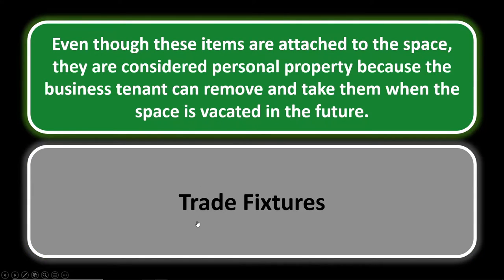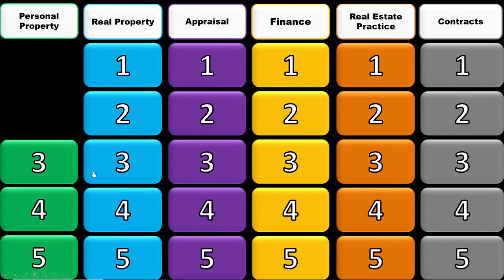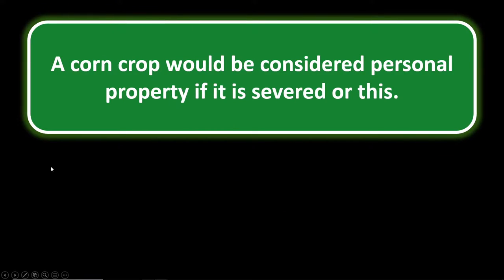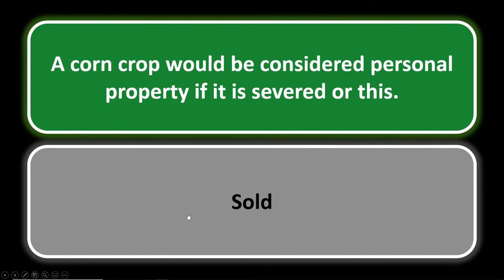Personal property number three: a corn crop would be considered personal property if it is severed or sold. A corn crop attached to the root system is considered real property. It becomes personal property when it is severed — cut, for instance — so it can be moved. Or even if the corn crop remains with the root system but has been sold, it is then considered personal property.